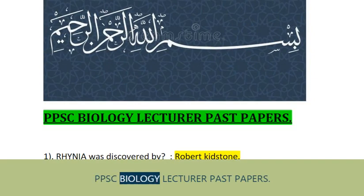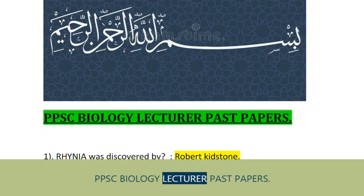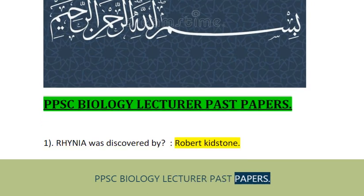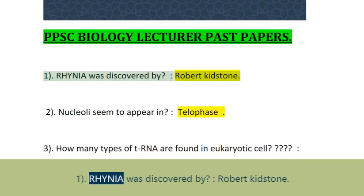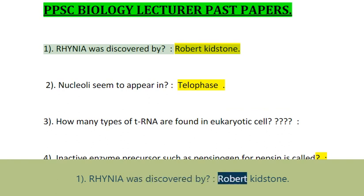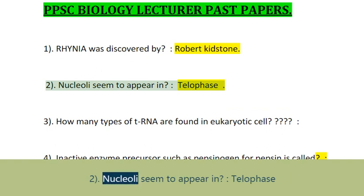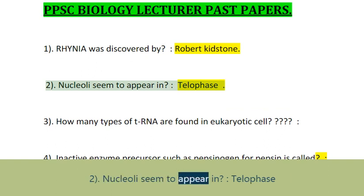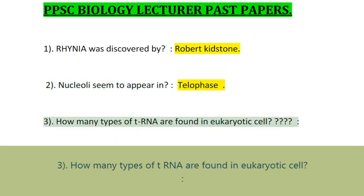PPSC Biology Lecturer Past Papers. Question 1: Rhenia was discovered by Robert Kidstone. Question 2: Nucleoli seem to appear in Telophase.